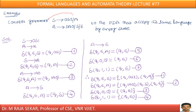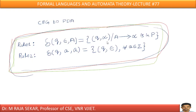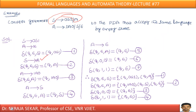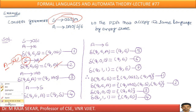Now consider the second production: S goes to capital A. Comparing with rule 1 where capital A goes to alpha, here my A is S and alpha is A. Therefore: delta of (Q, epsilon, S) = (Q, A).